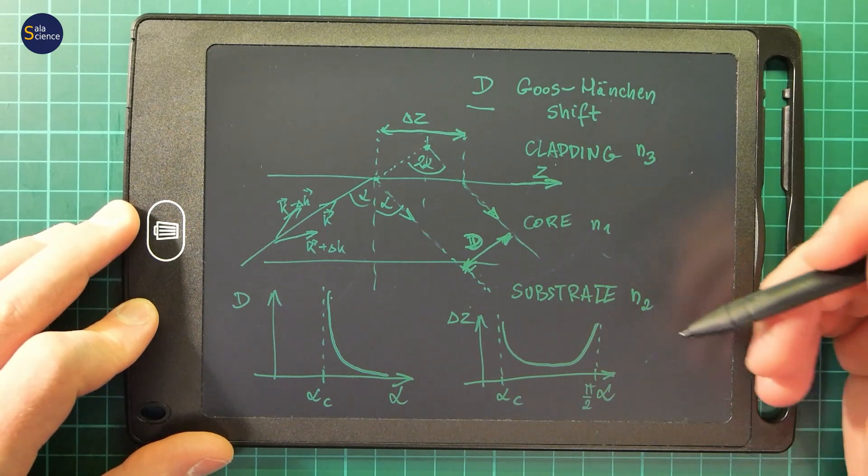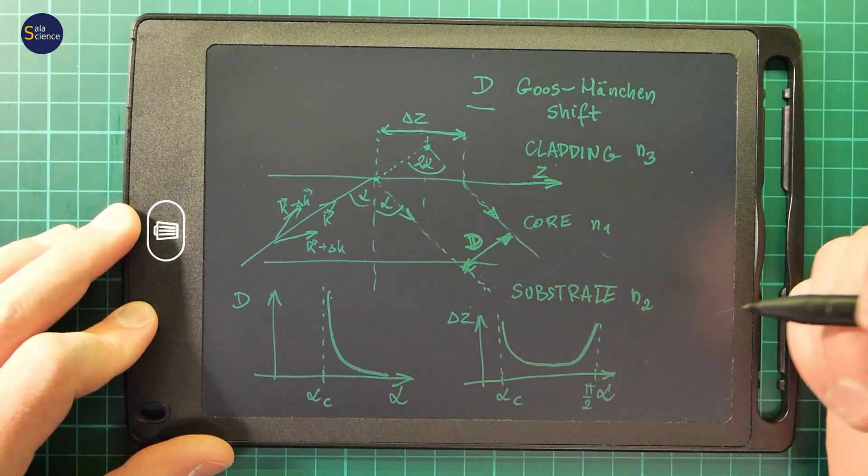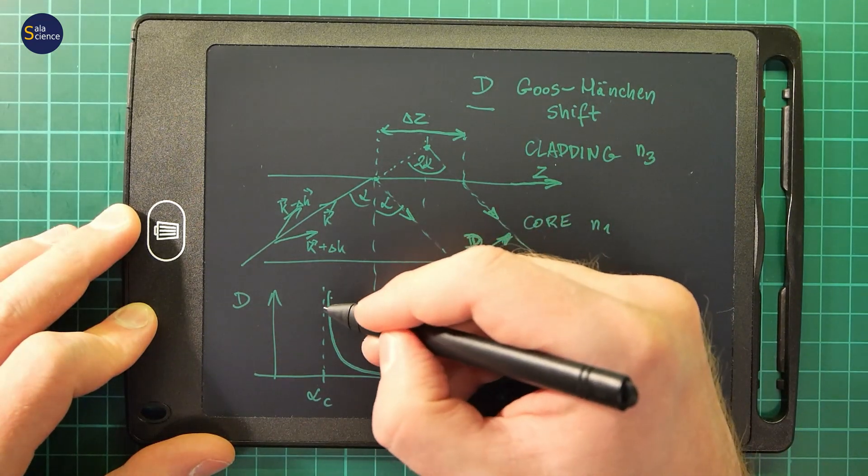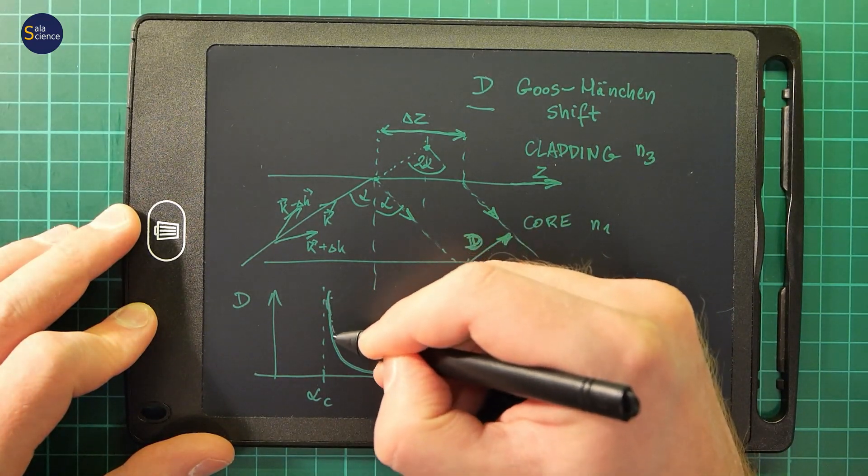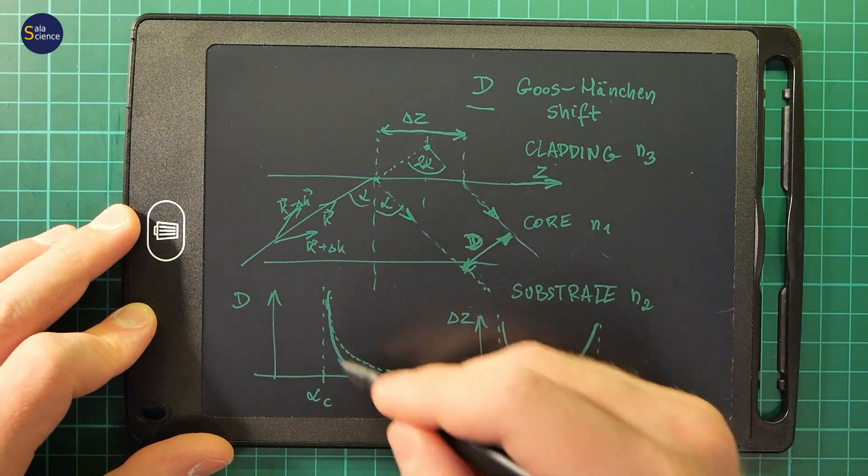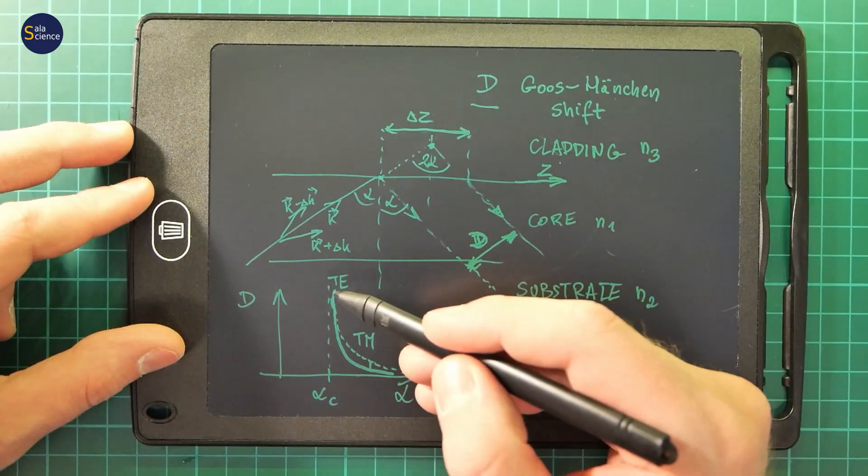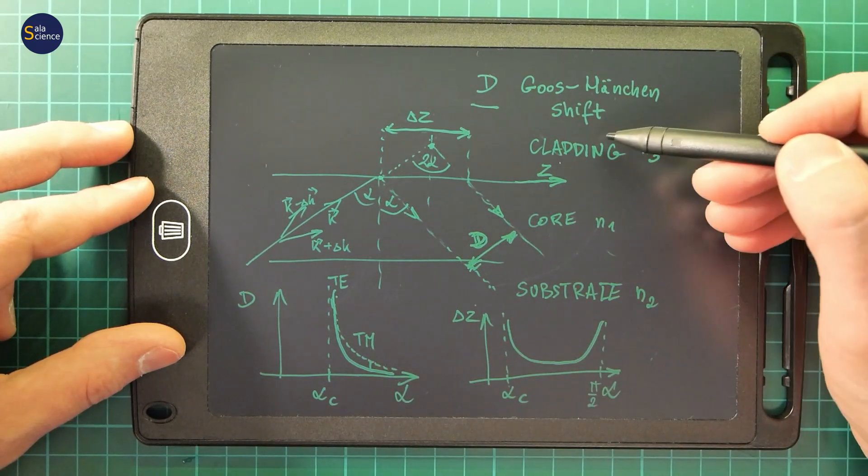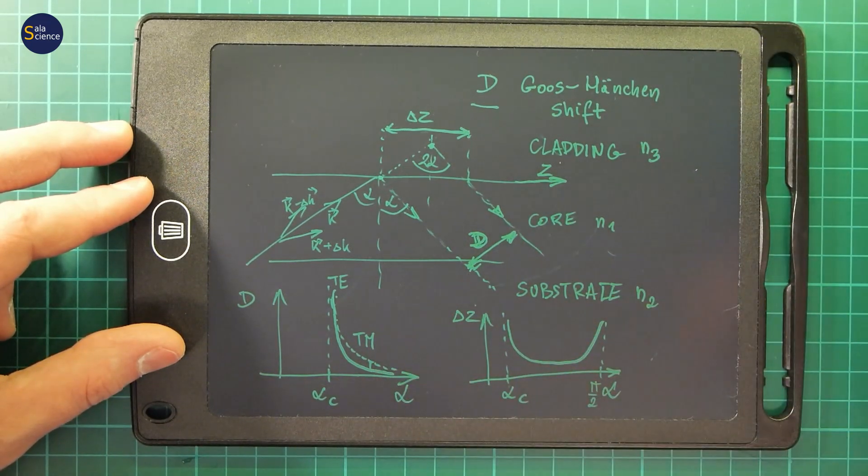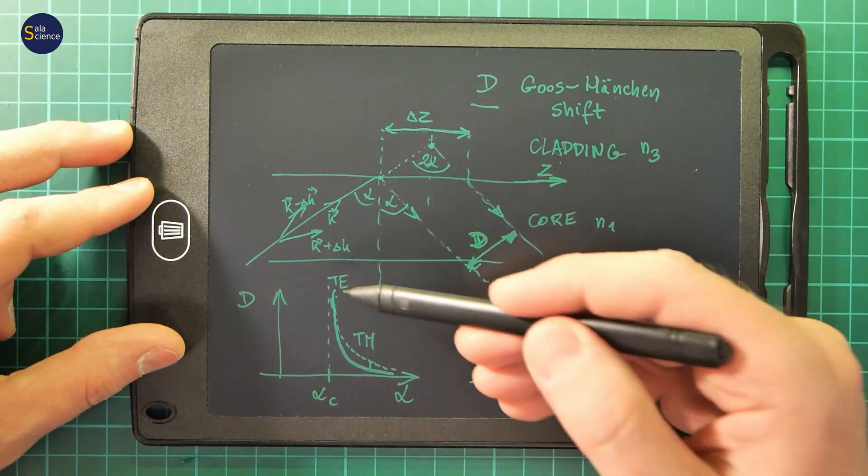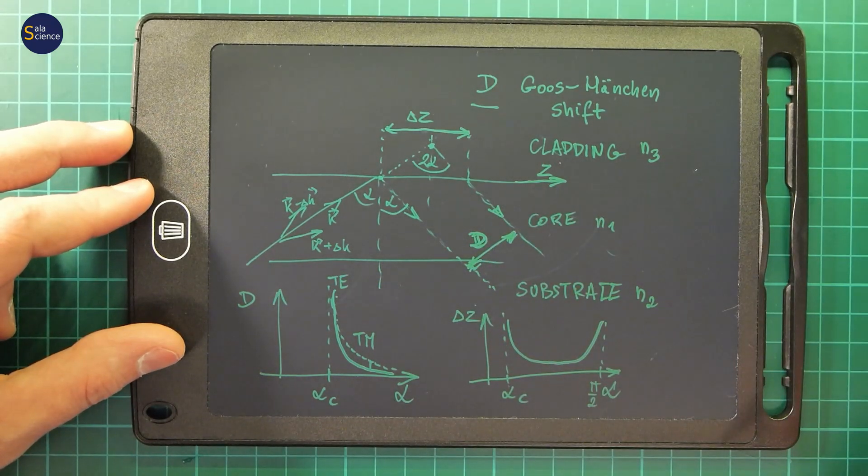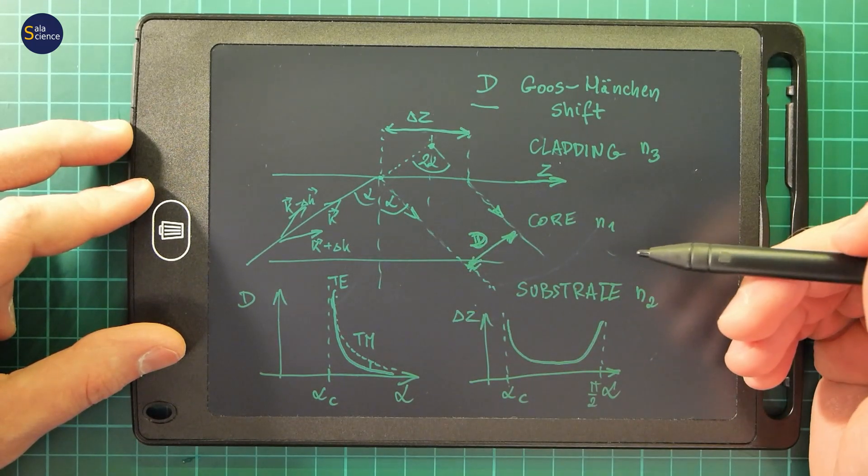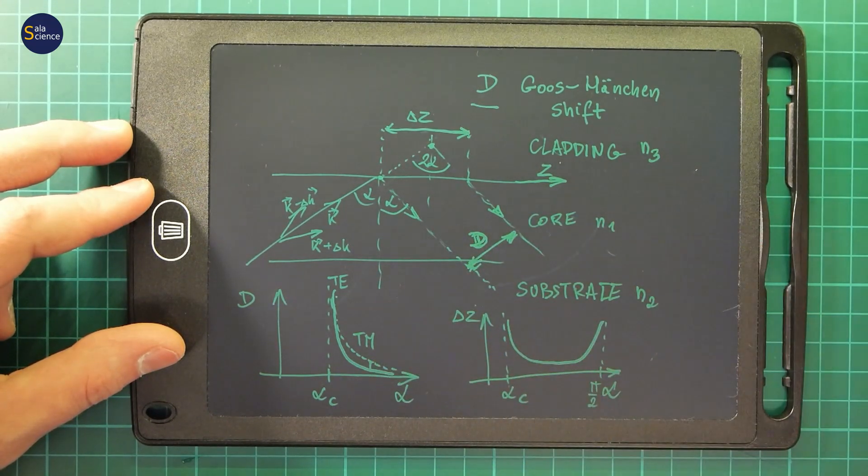If we draw this for TE and TM modes, then it will have a very slight difference between TE and TM, because for TE and TM modes the value of the Goos-Hänchen shift is slightly different. Then we can use this effect to separate these TE and TM polarizations. There will be multiple reflections, so this effect will be much larger.